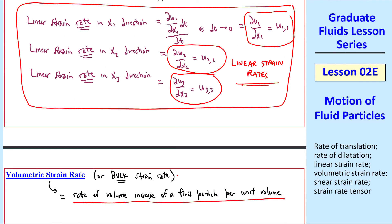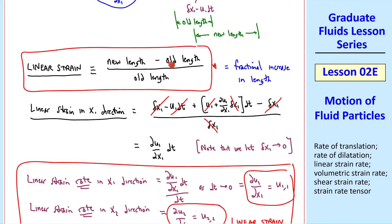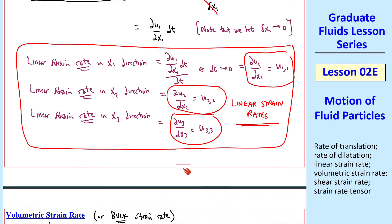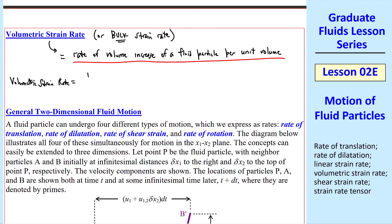You can see that this is kind of a three-dimensional version of what we had, which was the increase in length over the old length. This is the increase in volume over the original volume. Mathematically, this would be 1 over a small volume delta v times the material derivative of delta v, where we use material derivative since we're following this volume as it expands or contracts.